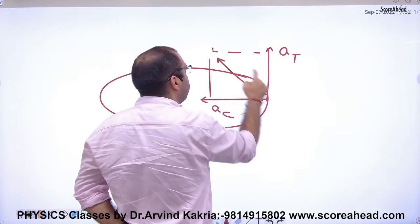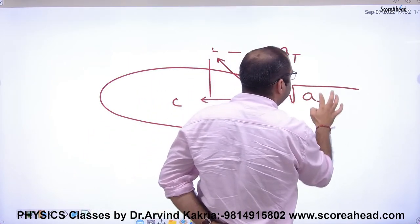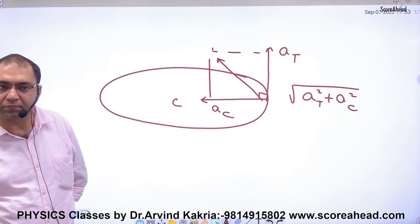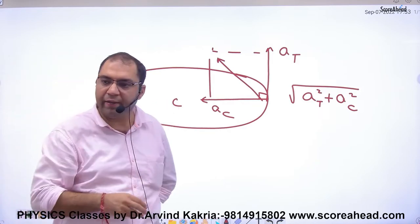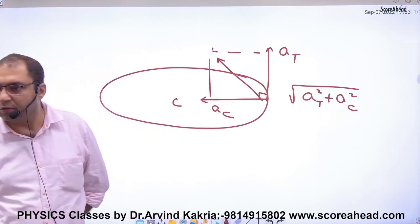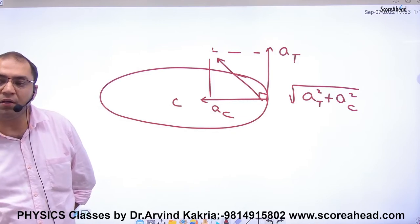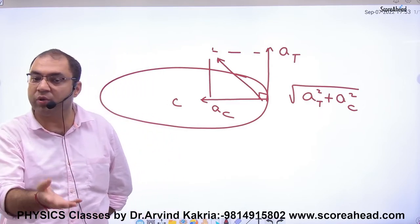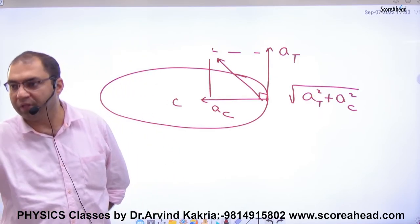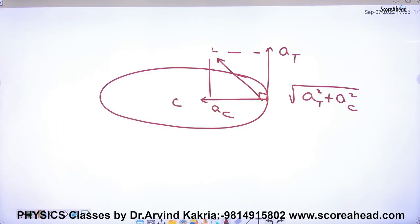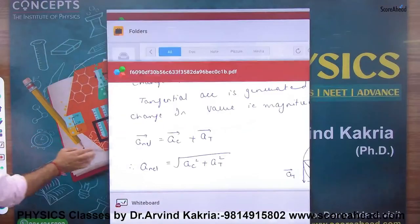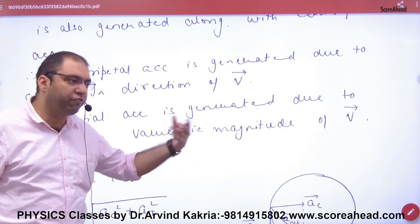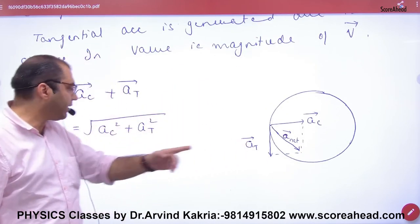Therefore, using the parallelogram law of vectors, the net acceleration equals the square root of (at squared plus ac squared). So in non-uniform circular motion, the net acceleration is the vector sum of tangential and centripetal accelerations: net acceleration = √(at² + ac²).